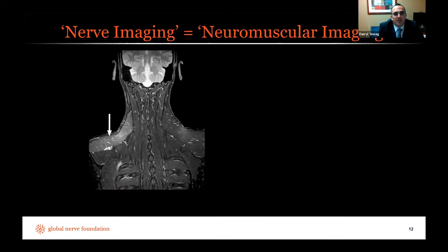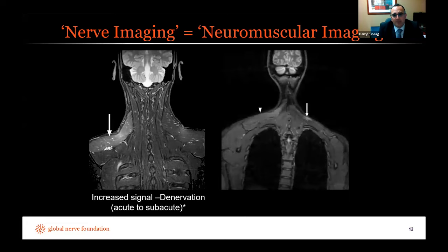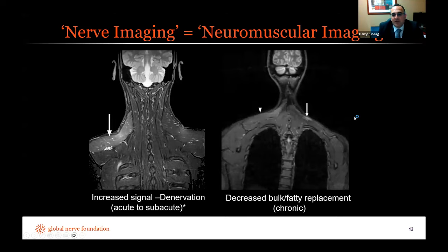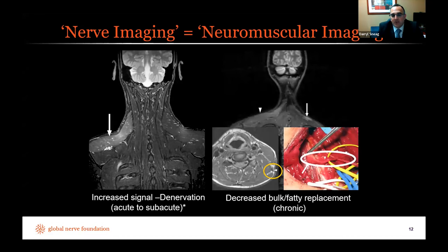When thinking about nerve imaging, we should really think about neuromuscular imaging because evaluating muscle is critical. Here is a patient with denervation edema of the right trapezius — seen more acutely, up to about six months. Unfortunately, in a different patient, the left trapezius is markedly atrophied. The nerve was injured and did not regenerate — this was due to a lymph node biopsy causing a neuroma of the spinal accessory nerve. In chronic denervation states, muscle not only loses bulk but undergoes fatty infiltration, which is thought to be irreversible.